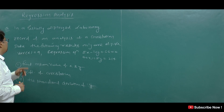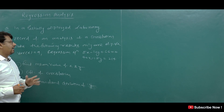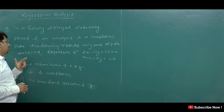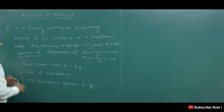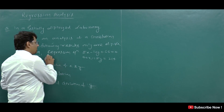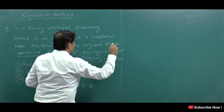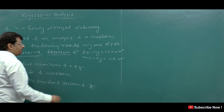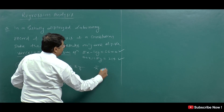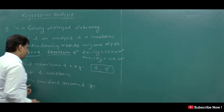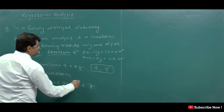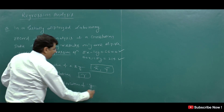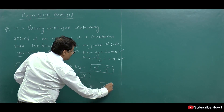So here, in a partially destroyed laboratory record of analysis of correlation data, the following results are available: the variance of x is 9, and the regression equations are given here. You are asked: find the mean value of x and y, meaning find x̄ and ȳ. Then find the coefficient of correlation, meaning find r. And then find the standard deviation of y, meaning find sigma y.